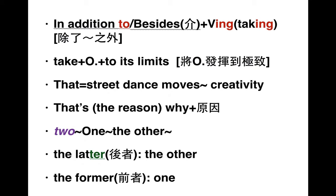In addition to taking the human body to its absolute physical limits, dance moves also test the limits of one's creativity. 同学，'in addition to' 可以改成 besides、apart from 或 aside from，后面记得接V-ing，因为前面是介词。他说除了将人的身体发挥到极致之外，舞蹈还可以测试一个人创意的极致。